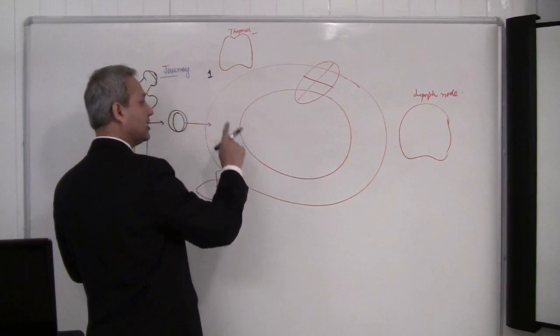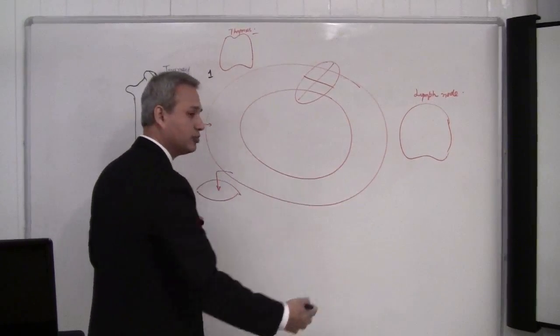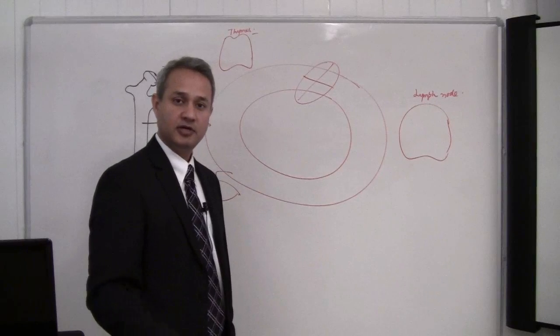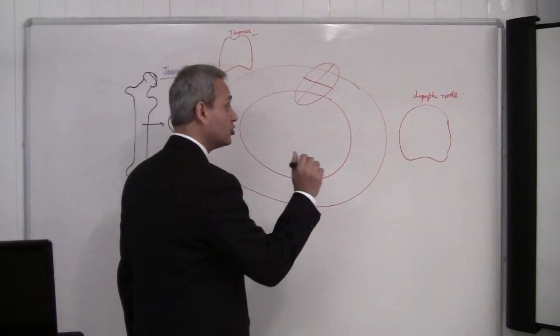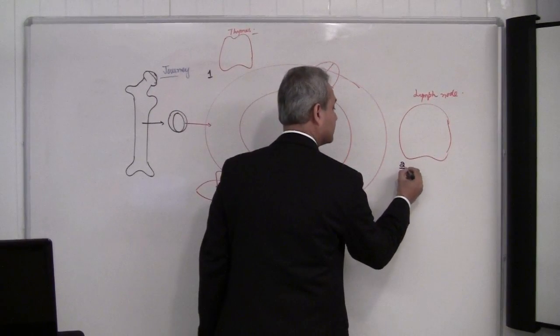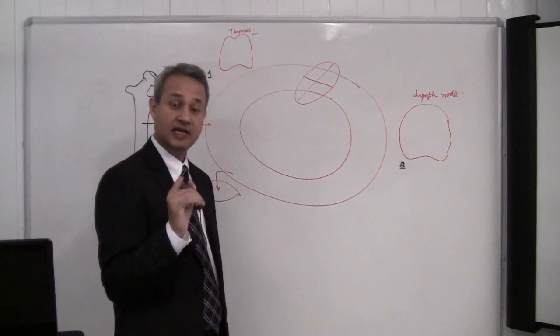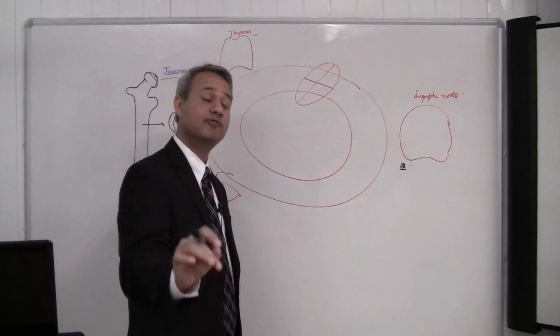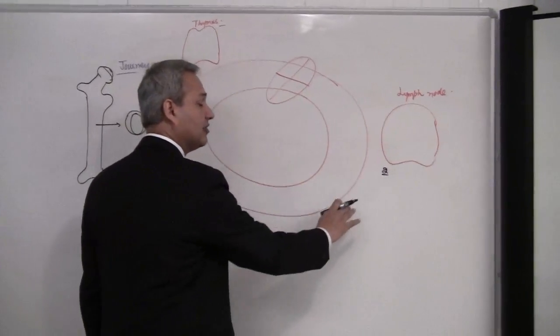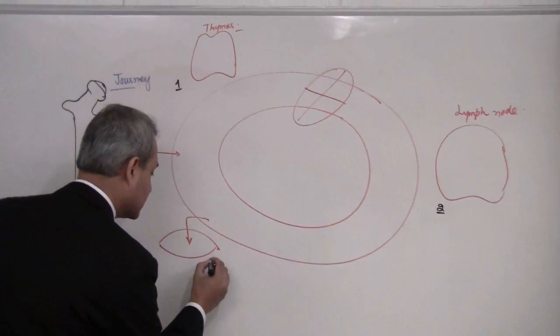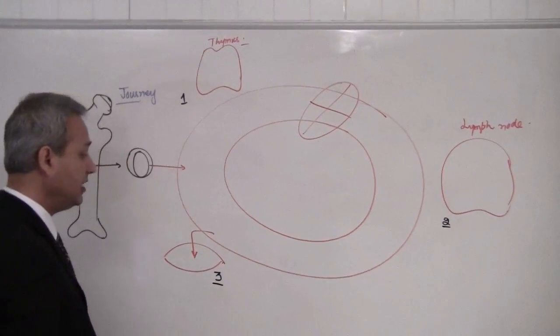From the thymus when it comes out, once again the whole world is open to this. Once again the whole body is open to this. It can go anywhere. But once it comes out of the thymus, it goes to the lymph node, lives there. That is the home for the T cell. Once it comes out of the lymph node, it can either go to another lymph node or it can go to an infected tissue.